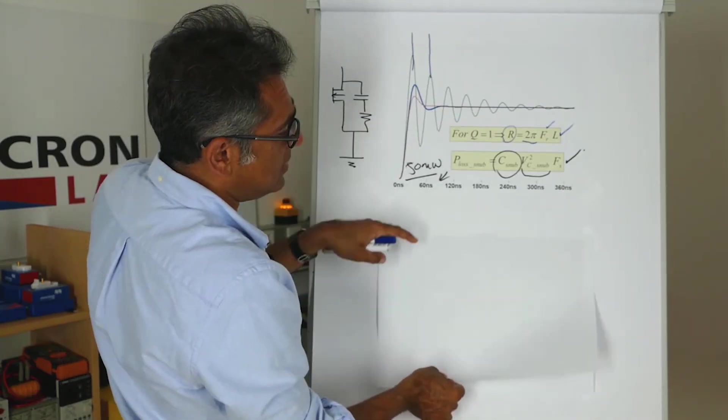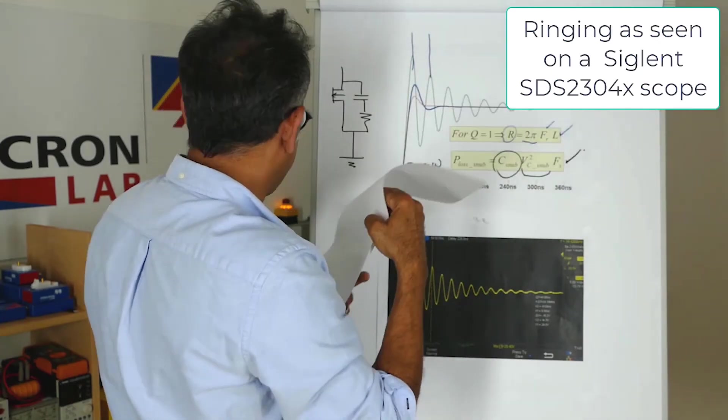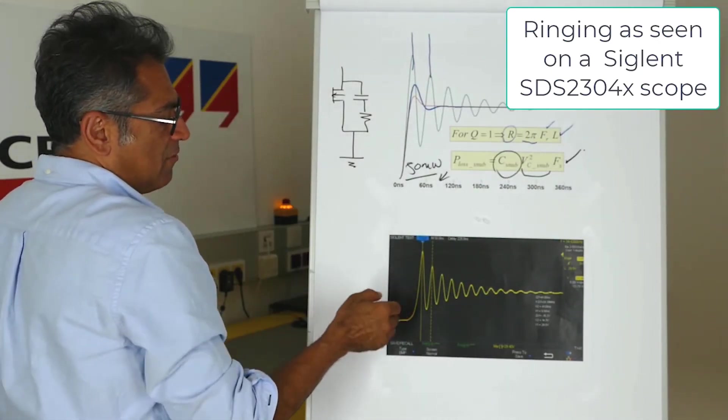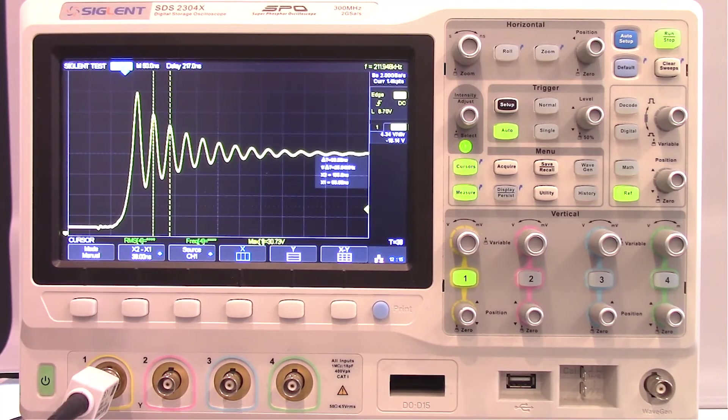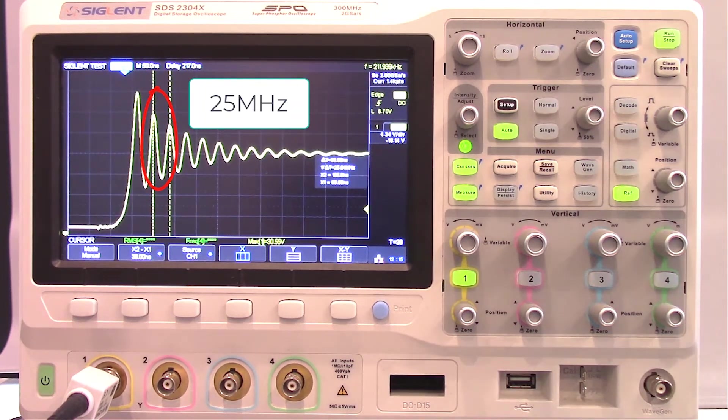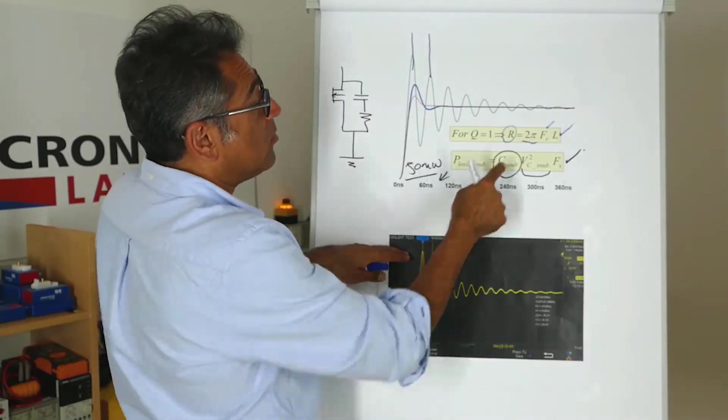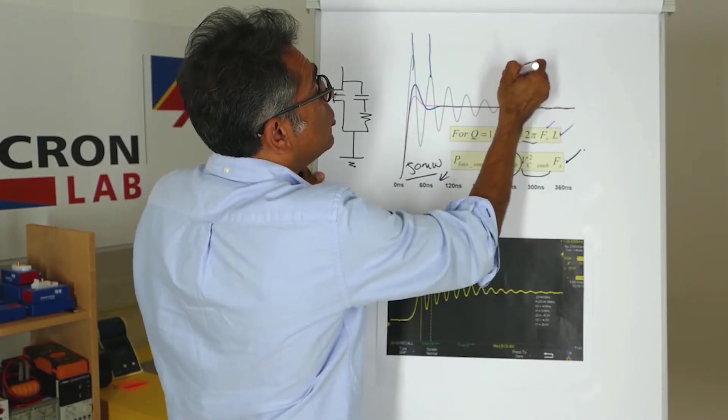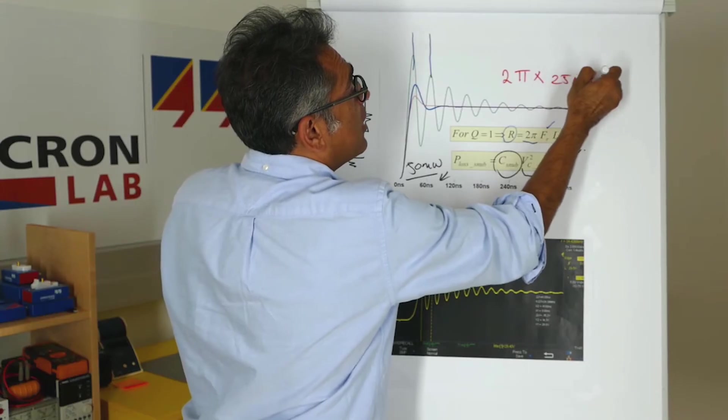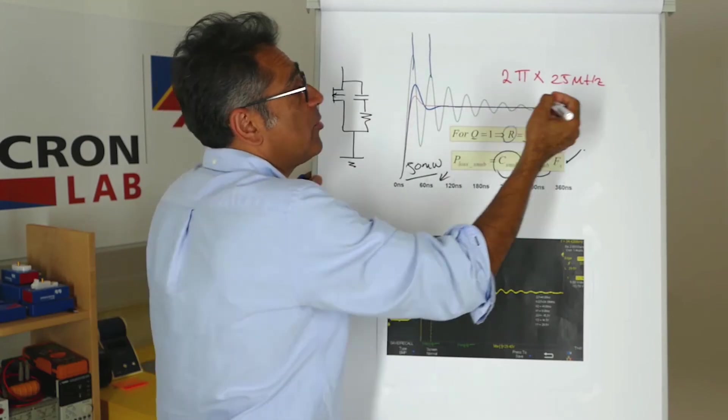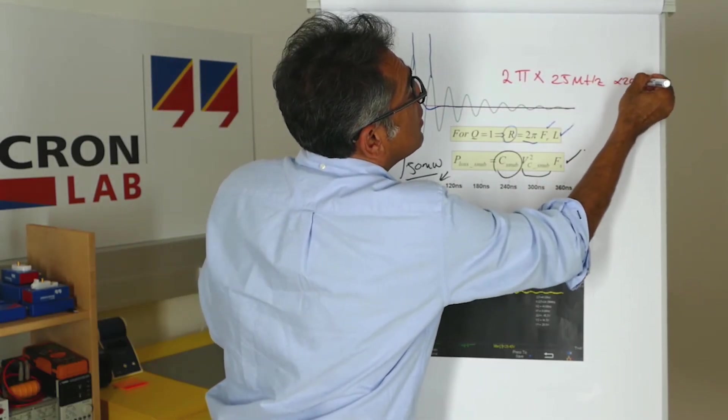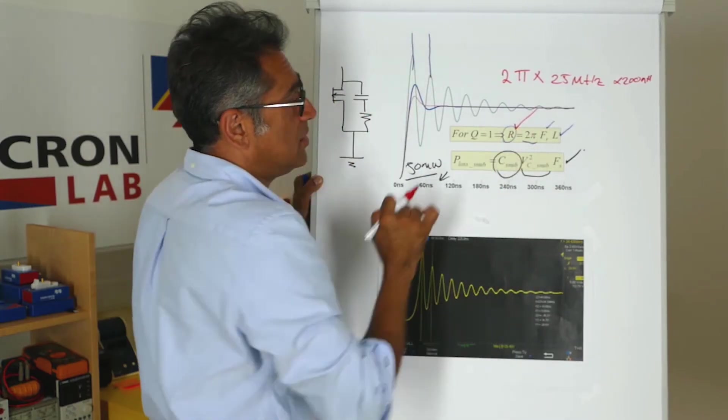So if you look at the green trace, that is now a real measurement on a flyback power supply, and I have measured the ringing frequency, which is around 25 megahertz. So to calculate my R, I have to do 2π times 25 megahertz. In one of the earlier videos, if I remember correctly, our total leakage as seen on the primary was around 200 nanohenries, and therefore you have calculated your R.